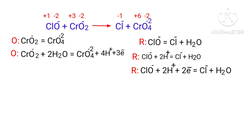The electrons lost in the oxidation half reaction must equal the electrons gained in the reduction half reaction. The oxidation half reaction has 3 electrons and the reduction half reaction has 2 electrons. To equalize them, multiply the oxidation half reaction by a coefficient of 2, and multiply the reduction half reaction by a coefficient of 3.